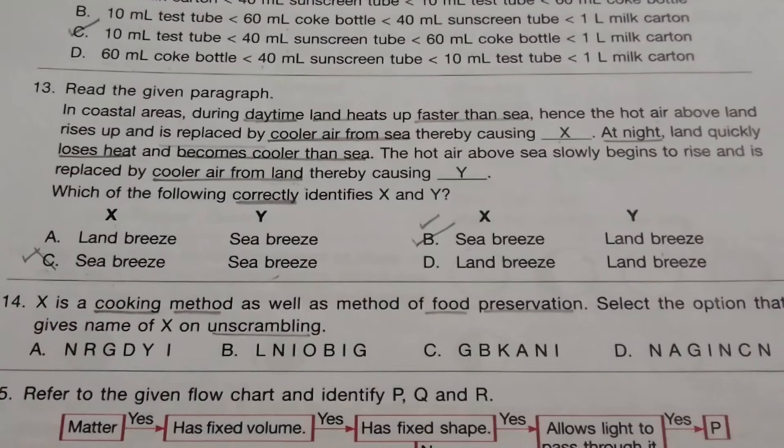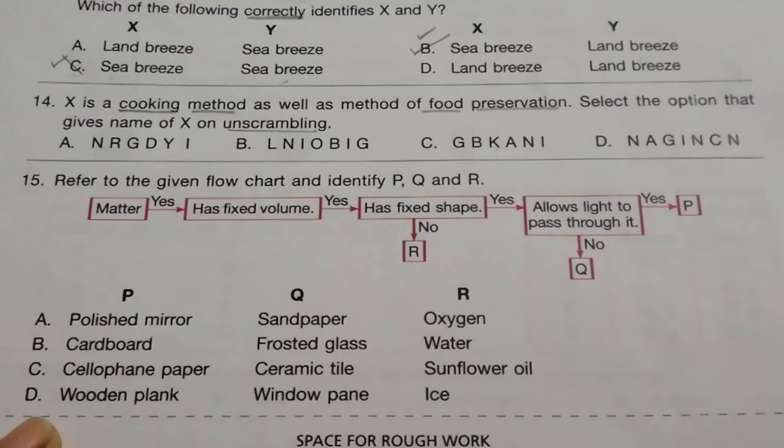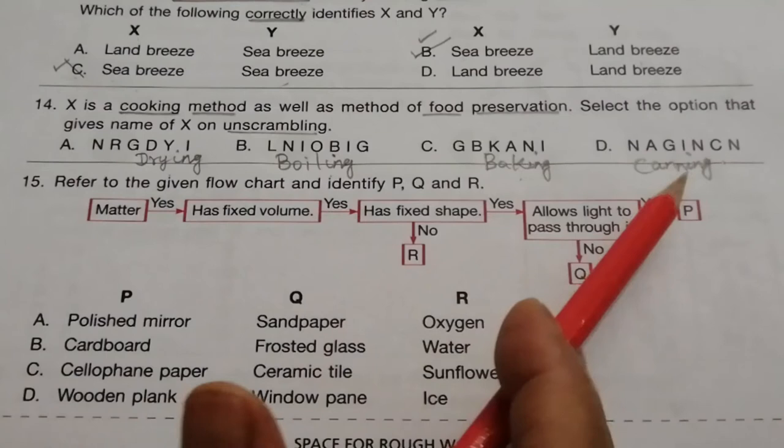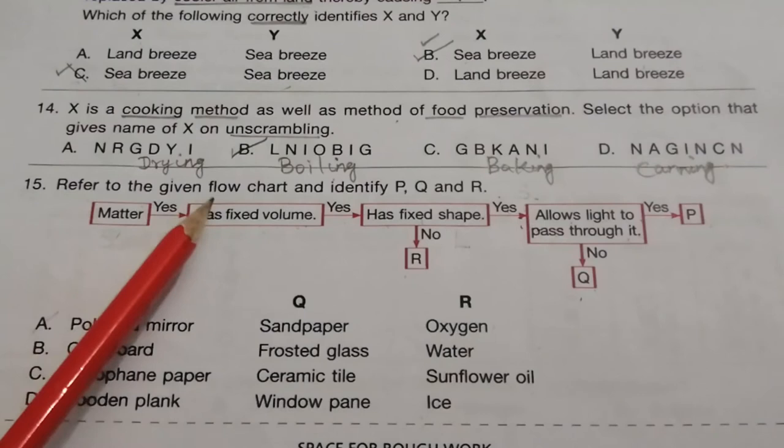Question 14: X is a cooking method as well as a method of food preservation. Select the option that gives the name of X by unscrambling the given words. Unscrambling gives: drying, boiling, baking, canning. X is both a cooking method and food preservation method — the answer is B: boiling.